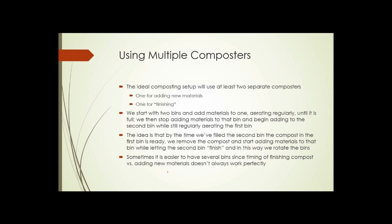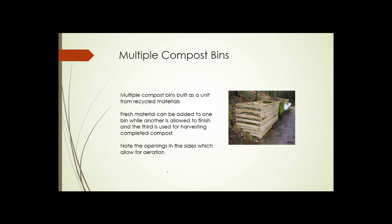Sometimes, it's better and easier to have multiple bins, since the timing of finishing the compost versus adding new materials doesn't always work out perfectly. So, it's not unheard of to have three or four or five bins, such as this, where we can be adding material to one, letting another one finish. If this one isn't finished by the time this one's full, we can add material to this one. And there's yet another one down on the far end.